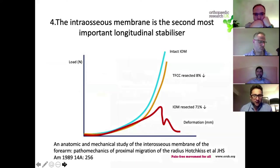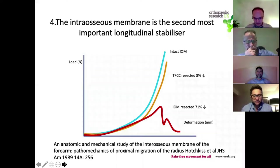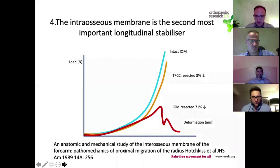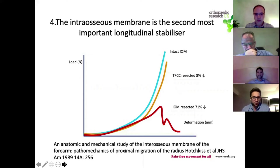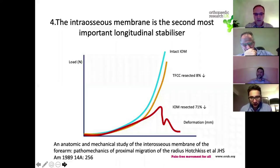Point number four: after the radial head, the structure which is the second most important longitudinal stabilizer is the intraosseous membrane. This was demonstrated by a clever study by Hotchkiss that effectively measured deformation of the radius when certain structures had been divided. The first condition was an intact intraosseous membrane: as loads are applied to the forearm, load is shared between the radius and ulna, transmitted through the proximal and distal radio-ulnar joints, with very little relative movement between the two bones.